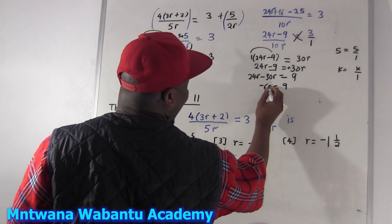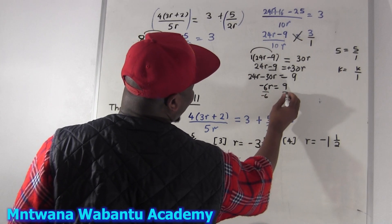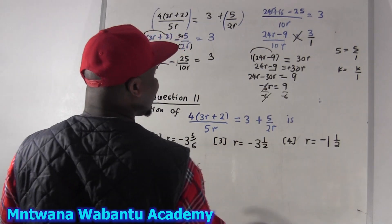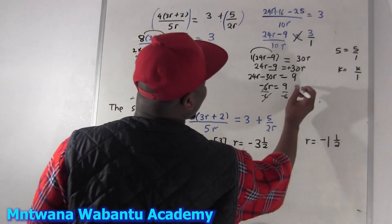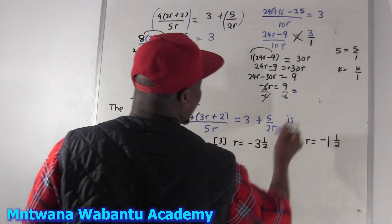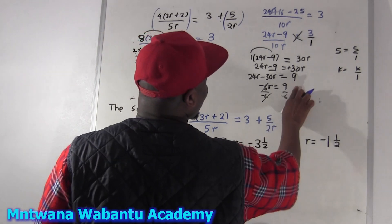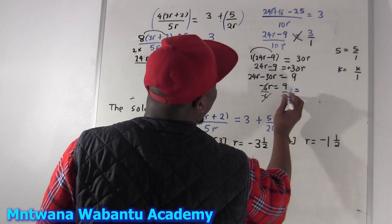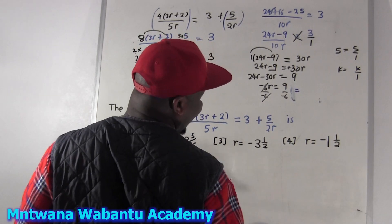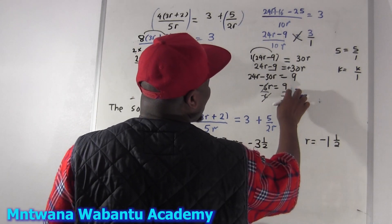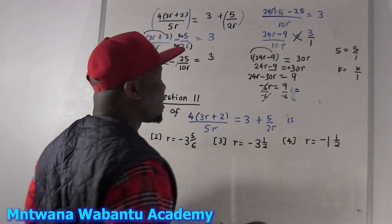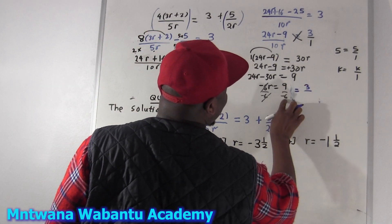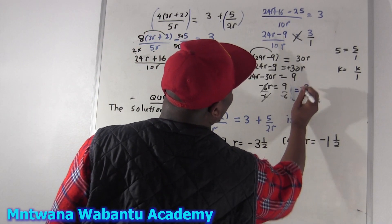So now bring the a terms together: 24a comes to the right side and becomes negative, and negative 9 goes over to become positive 9. So 24 minus 30 gives us negative 6a, equal to 9. To get a, divide both sides by negative 6. The negative 6 cancels, giving us a equals 9 over negative 6. Simplify — 3 is common for both: 9 over 3 is 3, and 6 over 3 is 2.